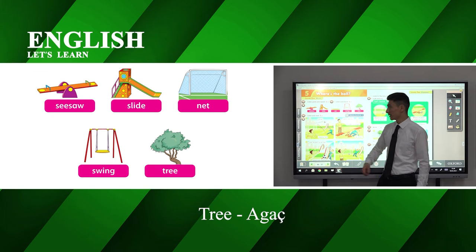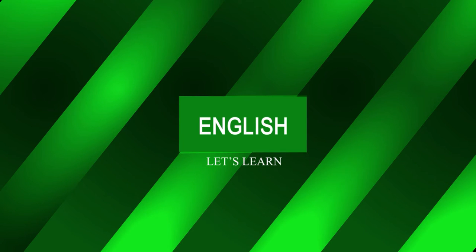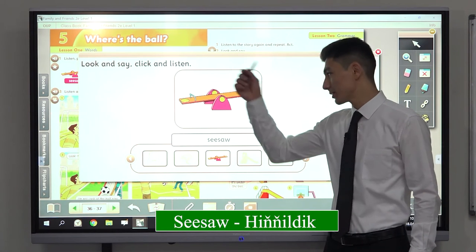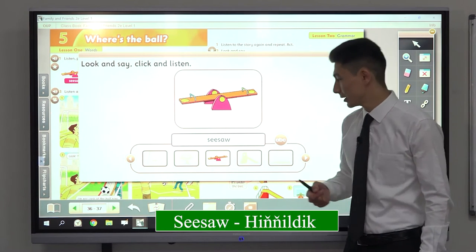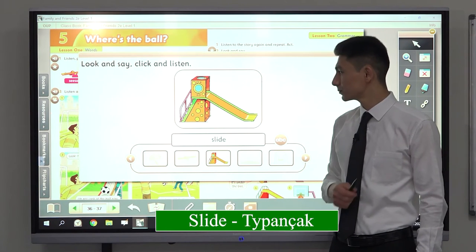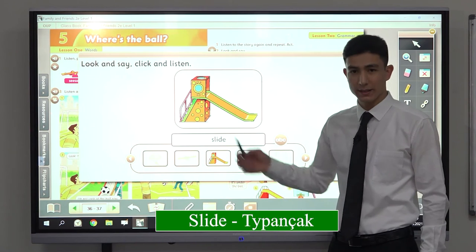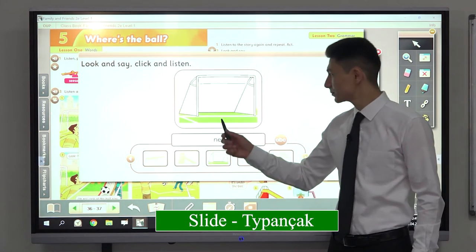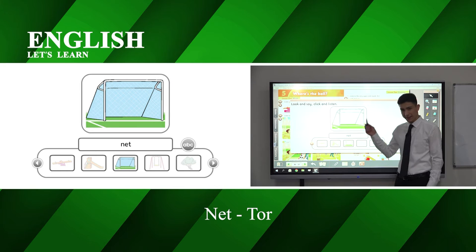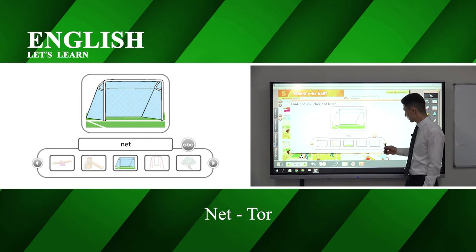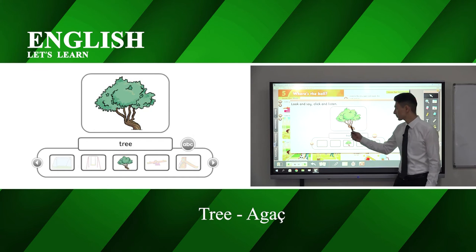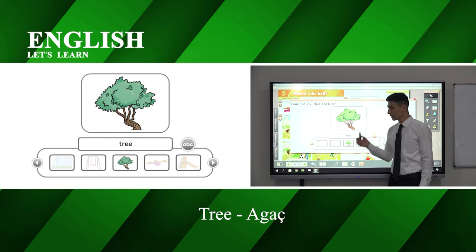Gelin inni bu sözlerimizi təzif edin. Yen onunla başlayalım. Seesaw — seesaw — neyəmədiyimi koli adı? Hingillik. Doğa medeliyin. Slide — slide, 'tı pançak' diyemeklilik. Doğa medeliyin. Net — net diyemeklilik, 'tor' diyemeklilik. Doğa medeliyin. Swing — swing diyemeklilik, 'badalığa' diyemeklilik. Doğa medeliyin. Tree — tree diyemeklilik, 'ağaç' diyemeklilik.